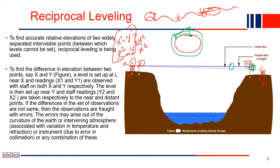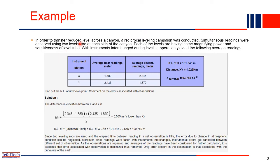If both differences are equal (X' minus Y' equals X2 minus Y2), then there is no error due to earth curvature or refraction. If they are not equal, there is error and it must be corrected. The error may arise due to curvature of the earth or variations in the atmosphere, such as temperature differences on either side of the river — perhaps due to nearby industries — which cause changes in air density that affect the straight line of sight.